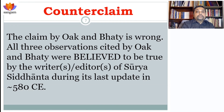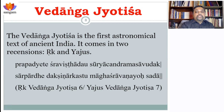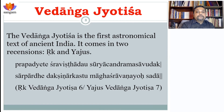First we start with Vedanga Jyotish, which is accepted as the first astronomical text of India. Its dating is very clear. We have Vedanga Jyotish coming in two recensions: one called Rik and another called Yajus. Both of them are quite similar with only a few verses different. The text can be dated precisely because it gives the exact position of the winter solstice at that time.